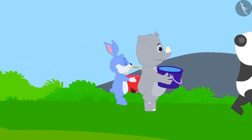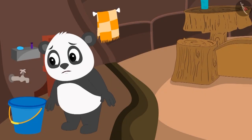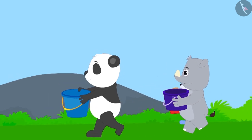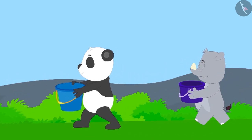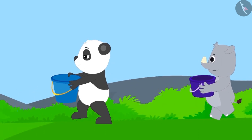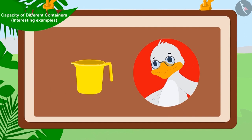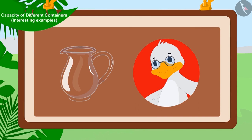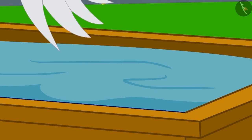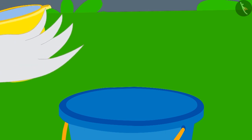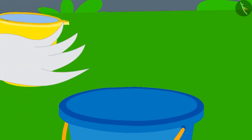Uncle filled the buckets of all the villagers using his jug and everyone returned to their homes. The next day, there was still no water in the village and all the people once again reached the well with their buckets. But today, uncle has brought a mug instead of his jug! Uncle filled his mug by dipping it in the tank and started filling Golu's bucket with his mug.